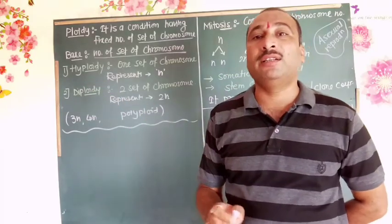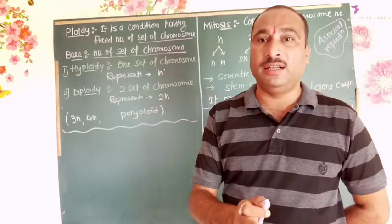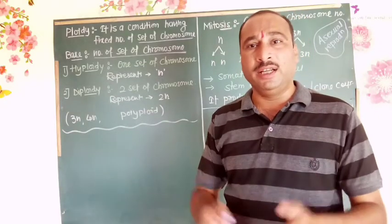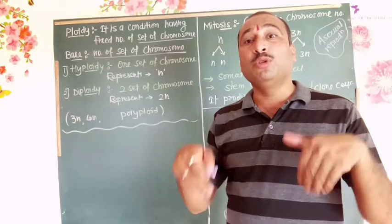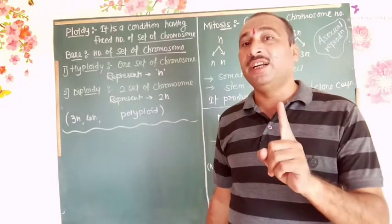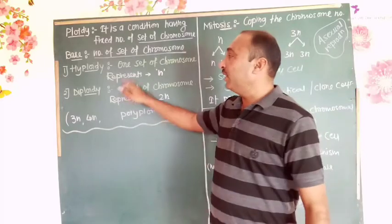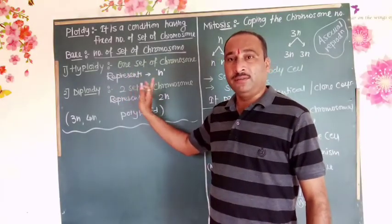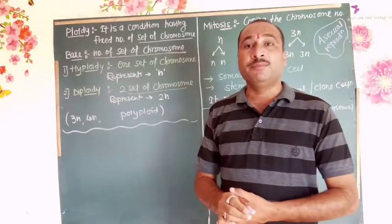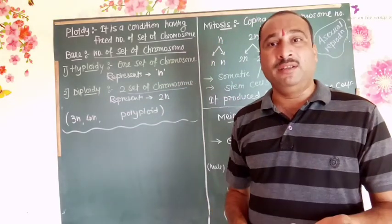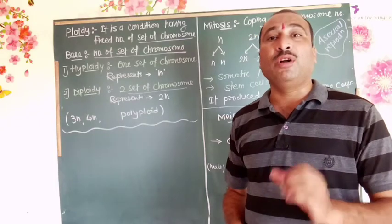The organism is called a haploid organism. If we have one set of chromosomes in one cell — only one set — it is called haploidy condition, and the cell is called a haploid cell. If two sets of chromosomes are there, then it is called diploidy, and that cell or living thing is called a diploid organism.